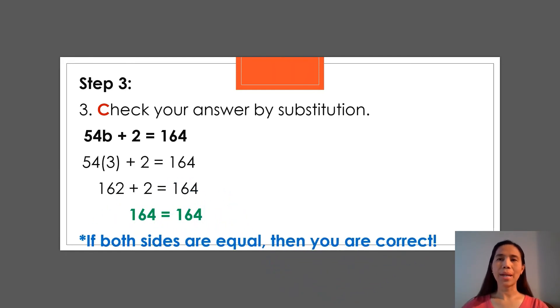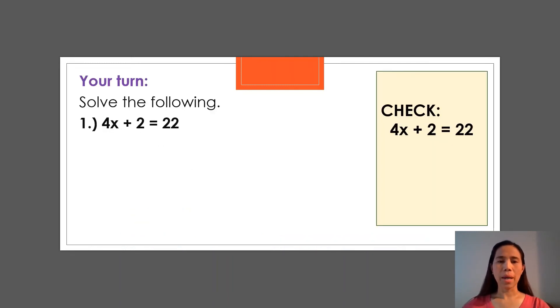So let's practice. I'll give you one to practice and I'll give you a minute to do it. Or maybe two. It's your turn. Solve the following. 4x + 2 = 22. So first thing, remember, combine like terms. So you could combine those numbers that are like or that are the same. We could see right here that 2 and 22 could be combined.